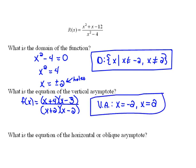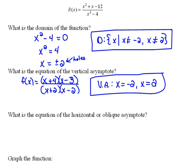Now, the last question here, except for graphing it, says what is the equation of the horizontal or oblique asymptote? For that, we need to look at our function and decide what case it is.